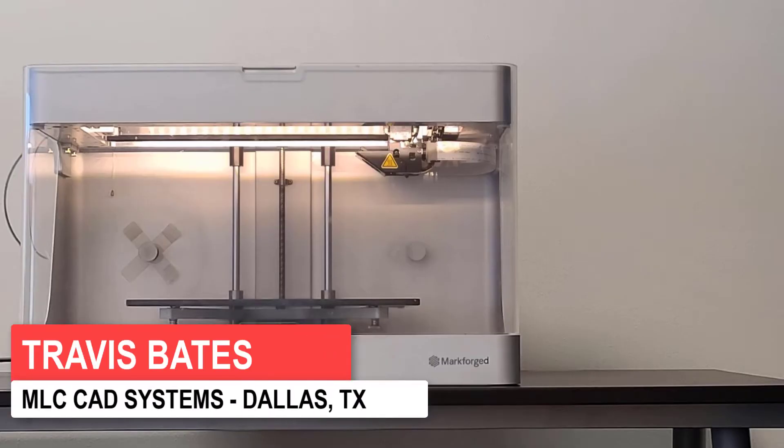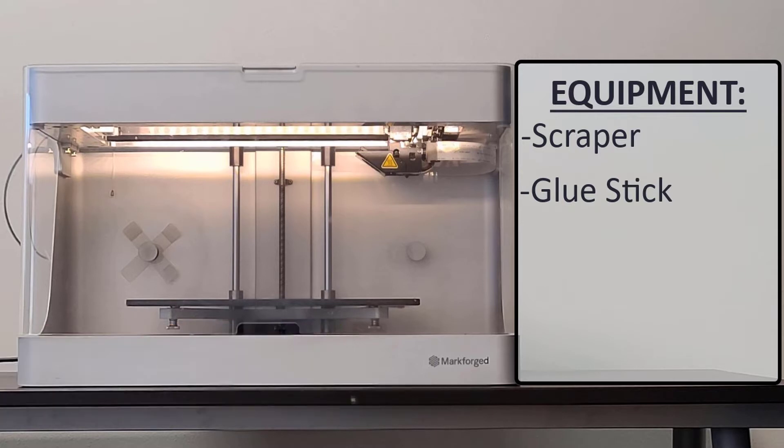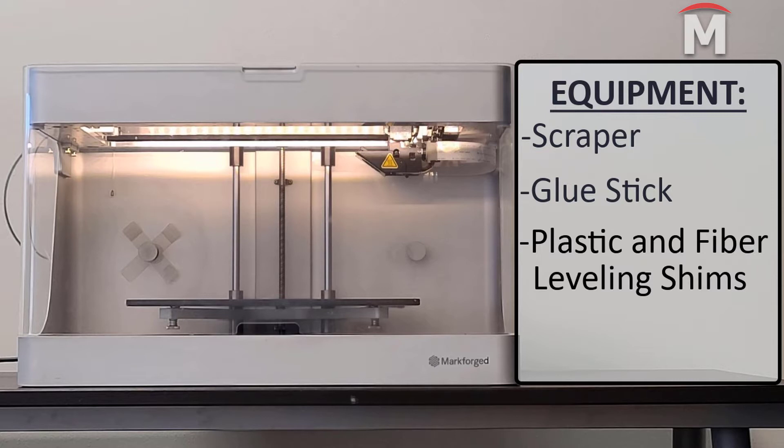We will now go over the shim bed leveling utility. For this utility we will need a scraper, a glue stick, our plastic leveling shim, our fiber leveling shim, and a two and a half millimeter hex key.